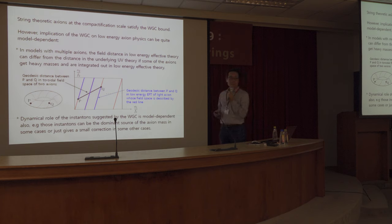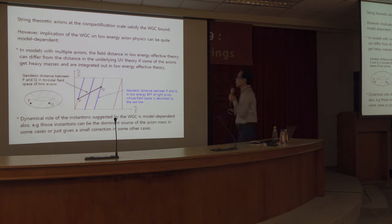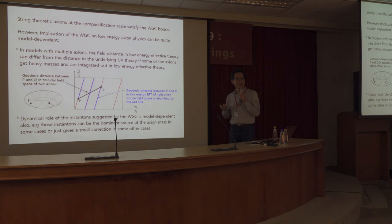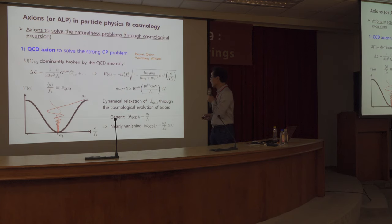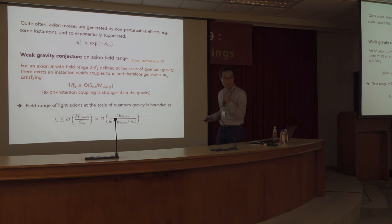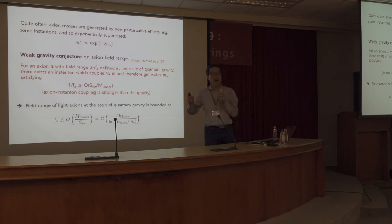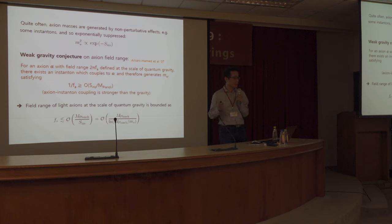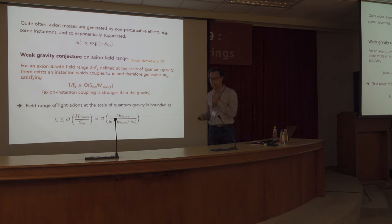We think that all known axions obey this swampland conjecture bound on the axion field range. However, I wish to stress that we need to be more careful when trying to apply this swampland conjecture bound to the axion decay constant in low-energy physics. The reason is that the swampland conjecture involves the axion field range, which depends on how you define the field distance, and also involves some features of the instantons that couple to the axion, meaning the dynamical role of those instantons matters.